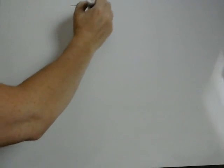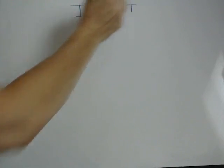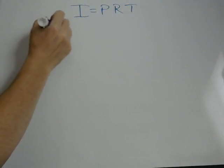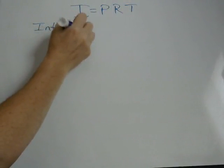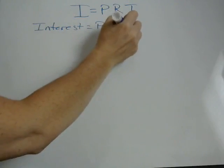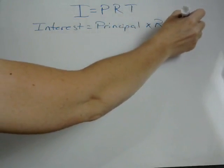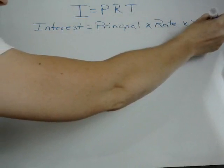Here we're going to talk about simple interest. If you look at the formula sheet that you have for the test, there is a formula called simple interest. The formula states I equals PRT, which means interest equals principal times rate times time.